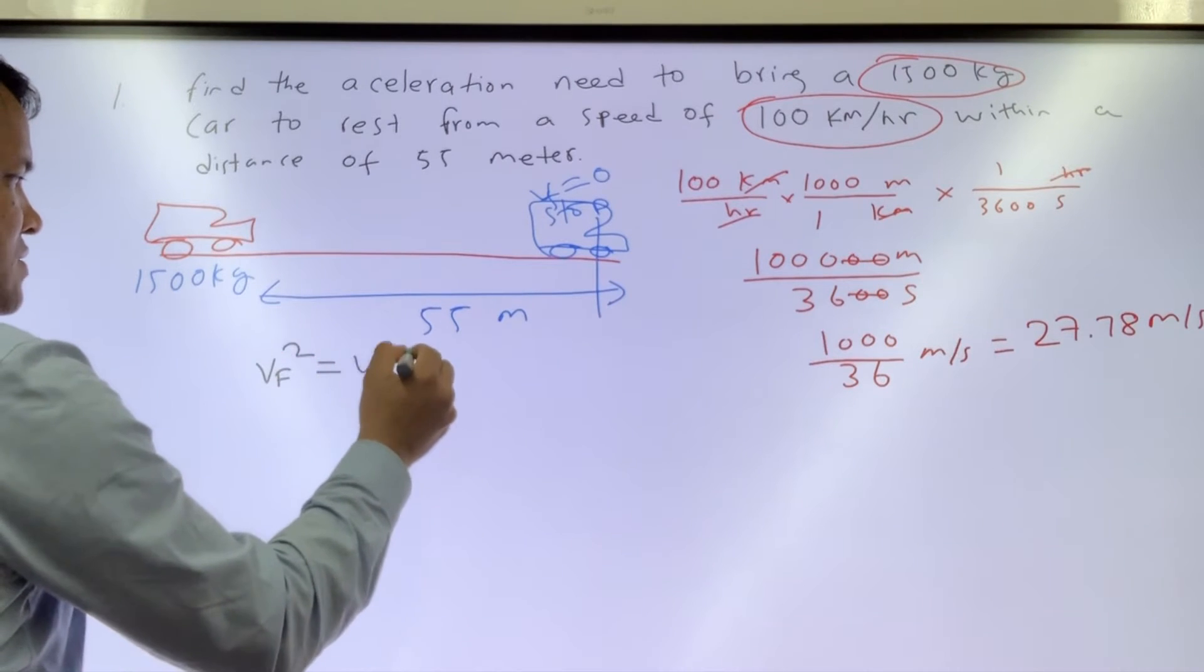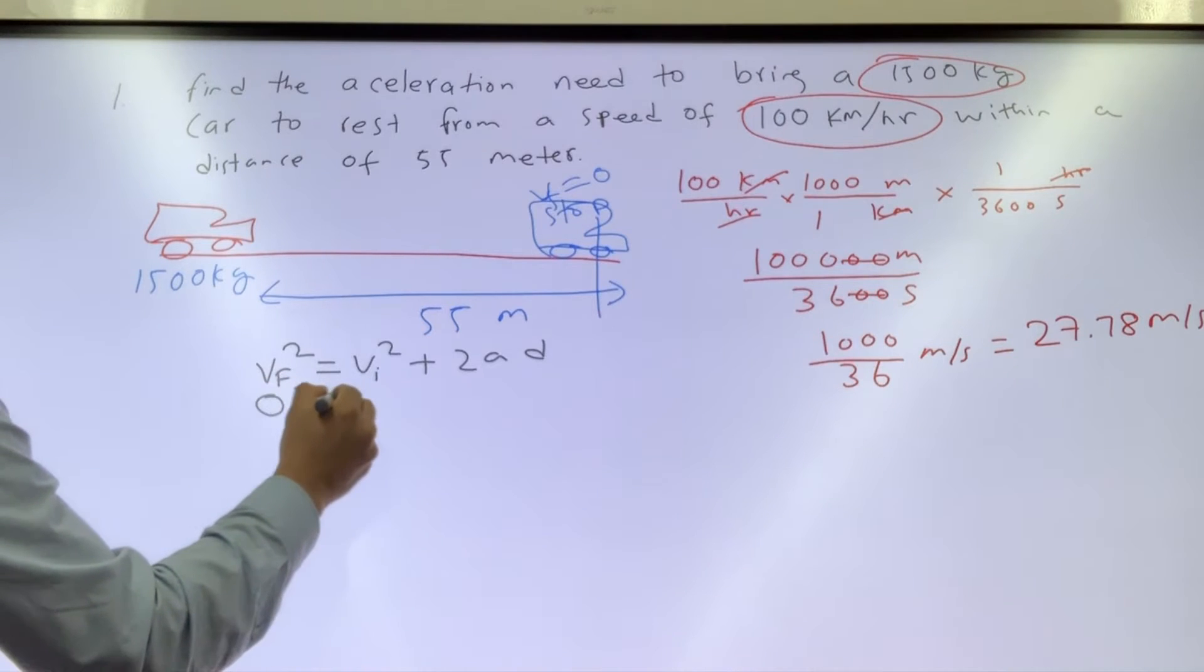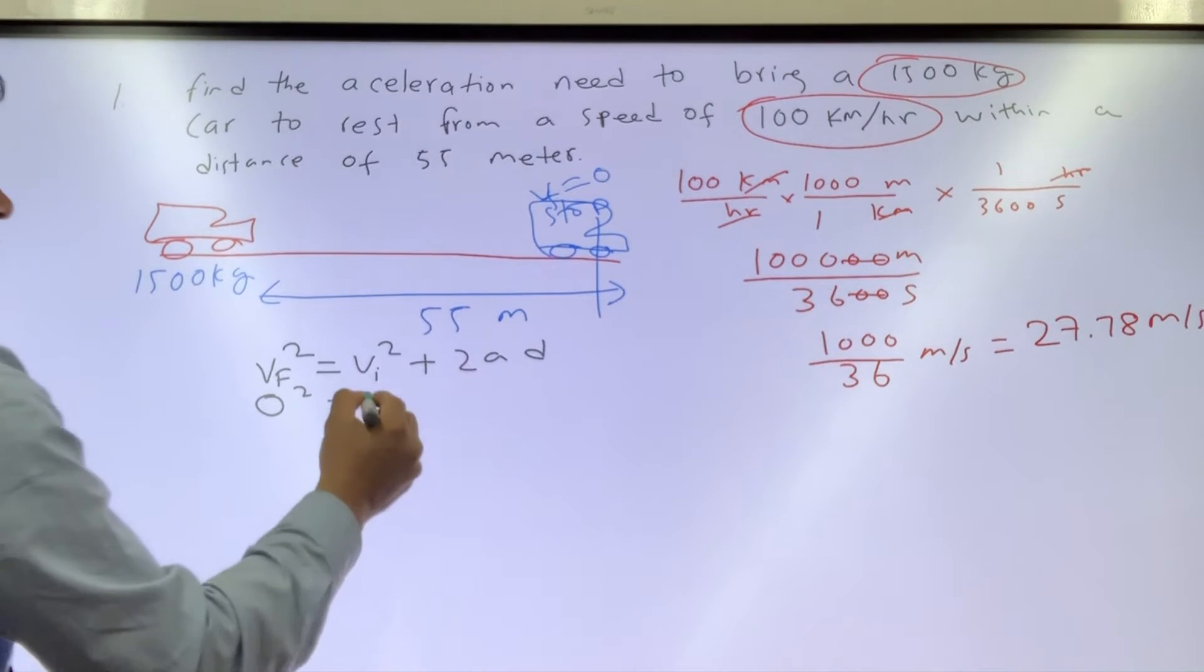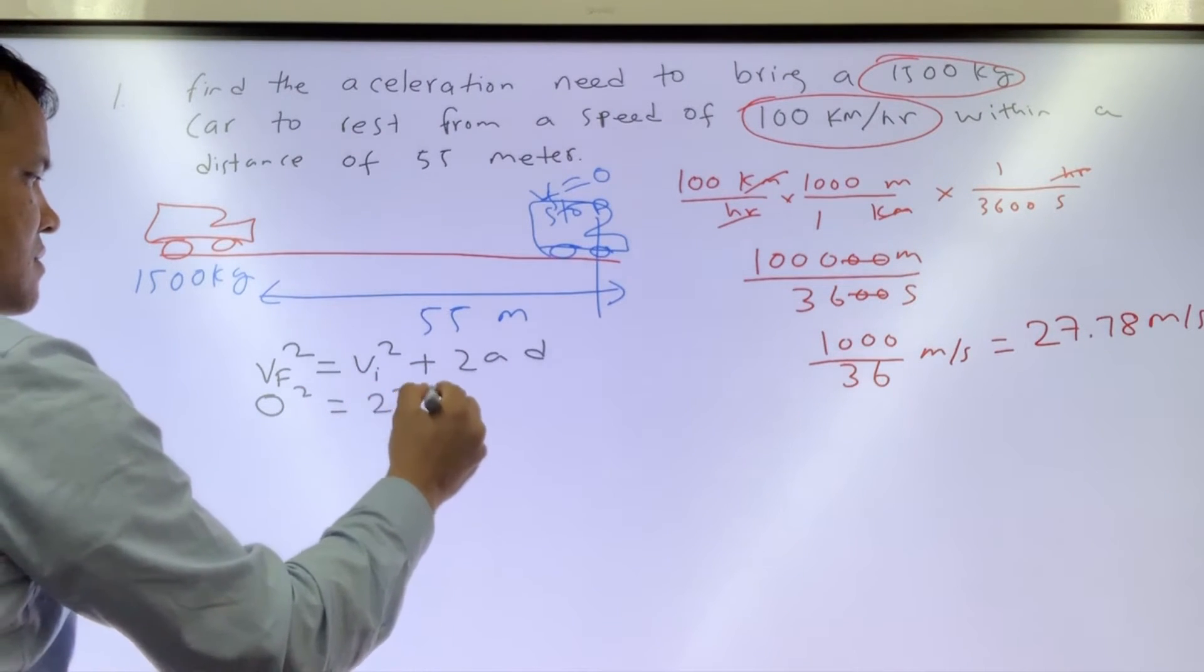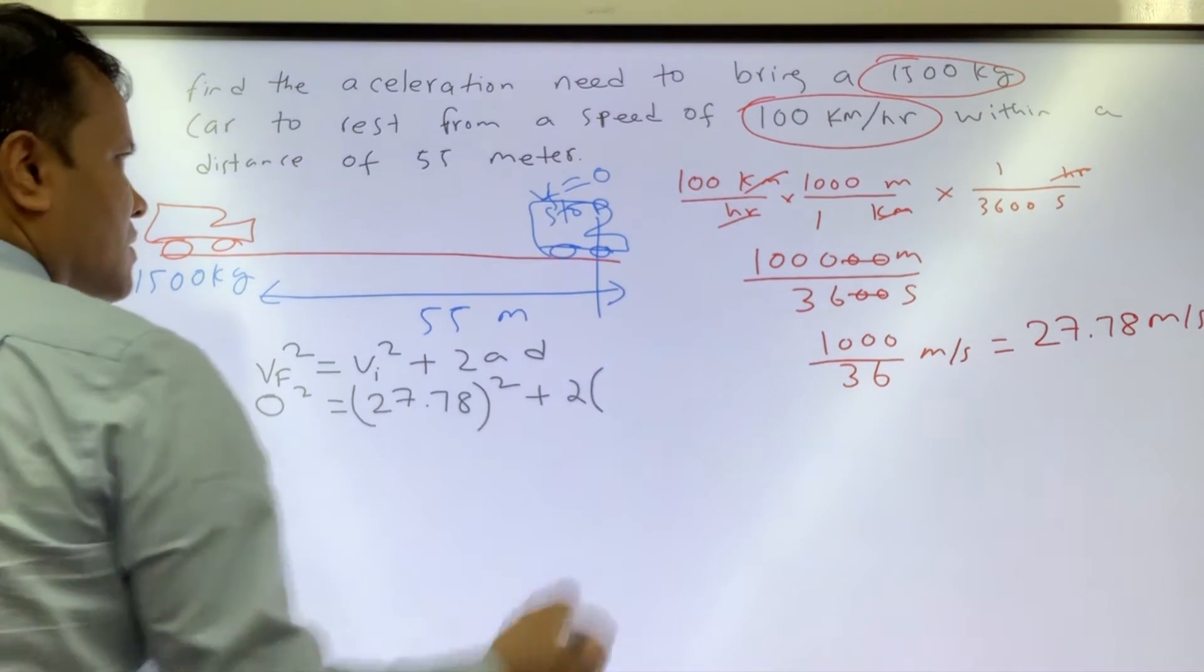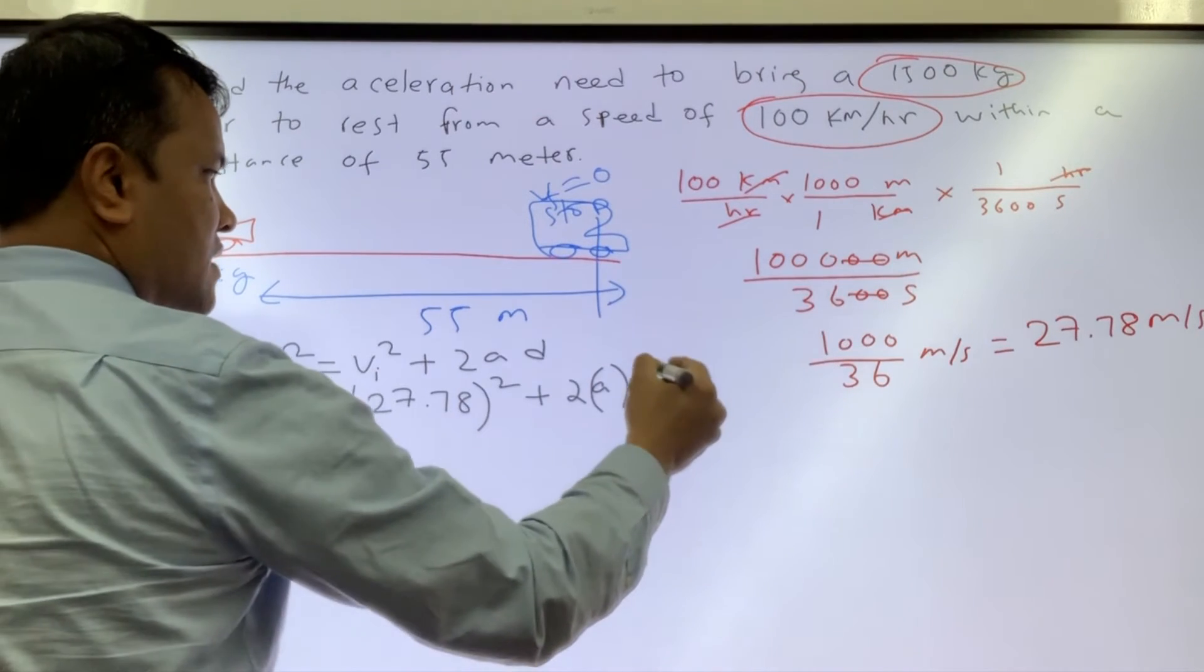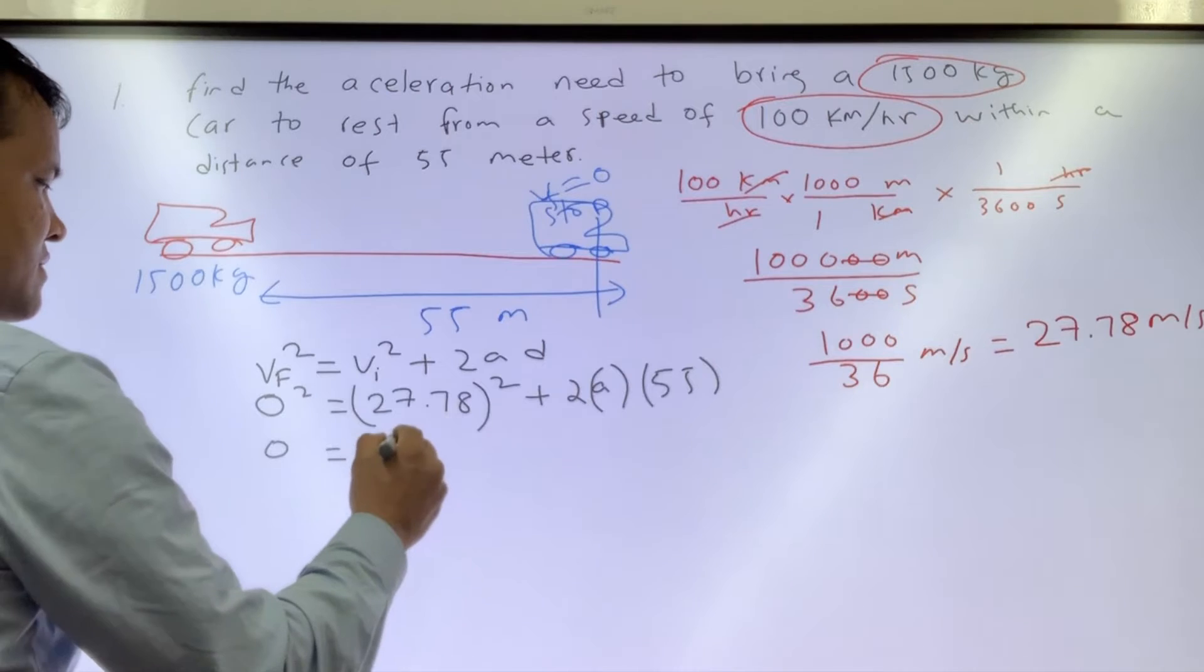initial velocity 27.78 squared plus 2 times acceleration—that's what we need to find—and d is 55. So 771.6 plus 110a. Okay, so we're gonna bring it over here, so it's gonna become negative.